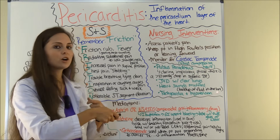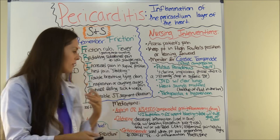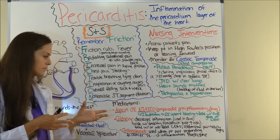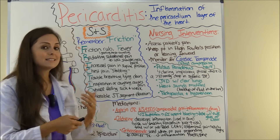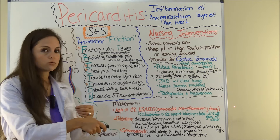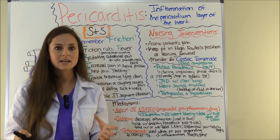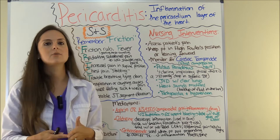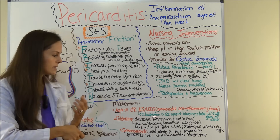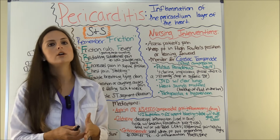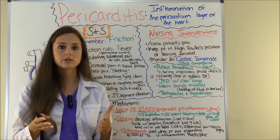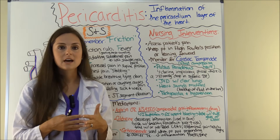Now let's look at the medications typically given in pericarditis. As prescribed by the physician, they may order aspirin or an NSAID — a nonsteroidal anti-inflammatory drug. Since pericarditis involves inflammation, we give something anti-inflammatory to combat that. A popular NSAID is ibuprofen; however, you have to watch for GI upset and bleeding with this drug, so as a nurse you want to make sure you administer it with a full glass of water.